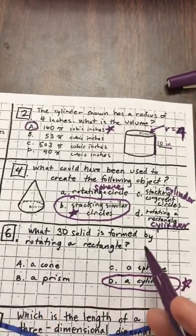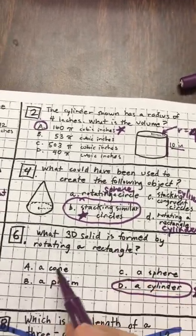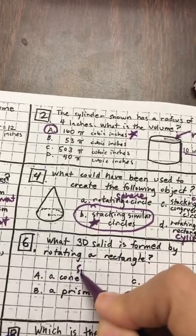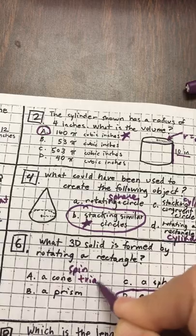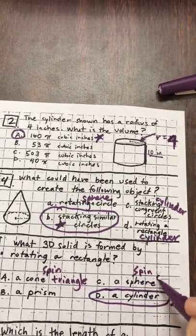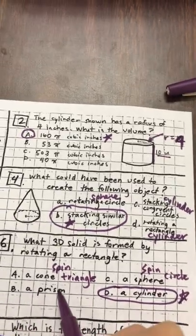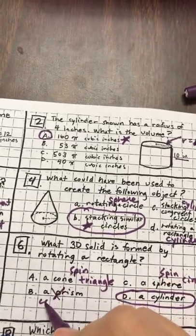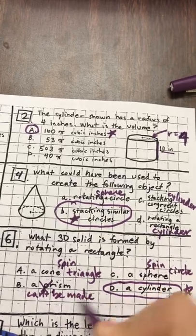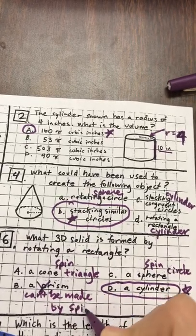Now, let's review and take a few more notes. A cone is made, yes, but by spinning we would have to spin a triangle. A sphere is made when we spin a circle. And a prism can't be made by spinning. Great.